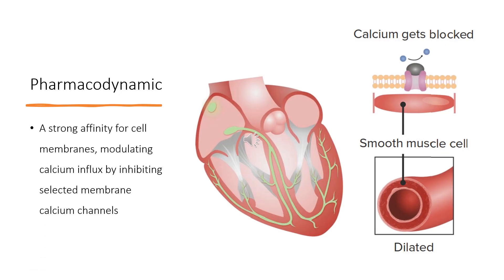Pharmacodynamics. Felodipine belongs to the dihydropyridine (DHP) class of calcium channel blockers (CCBs), the most widely used class of CCBs. There are at least five different types of calcium channels in Homo sapiens: L, N, P, Q, R, and T-type. It was widely accepted that CCBs target L-type calcium channels, the major channel in muscle cells that mediates contraction.